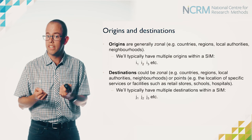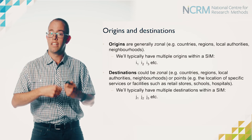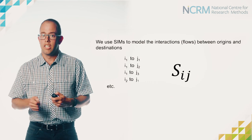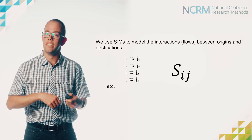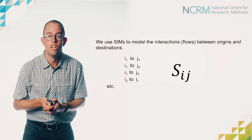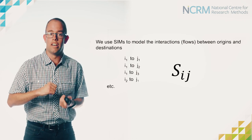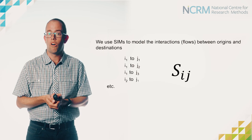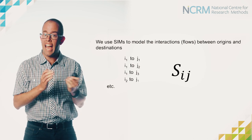So when we start to think about this in the form of an equation, we're trying to model the flows between any particular origin i and any given destination j. We're using our spatial interaction model to model those flows, and in mathematical terms we're modelling a flow which we denote with the letter S from a given origin i to a given destination j. And because we have multiple origins and destinations in our model, we're modelling lots of different Sij values.